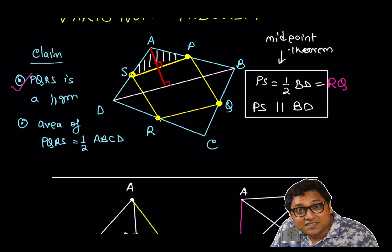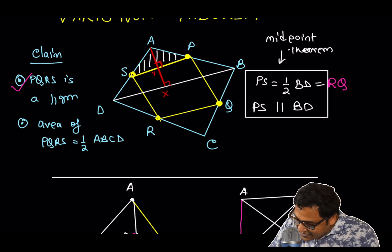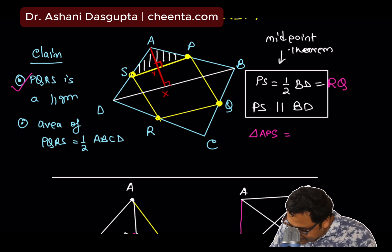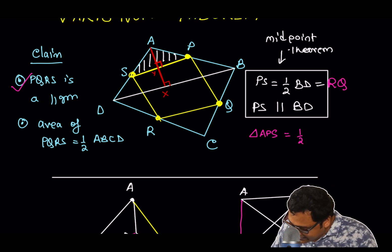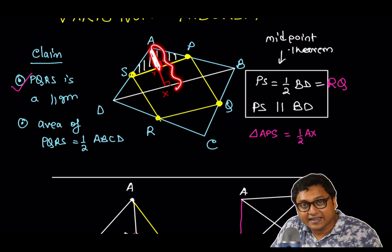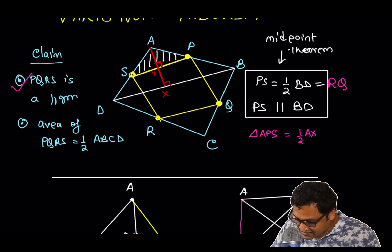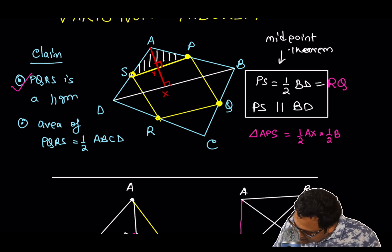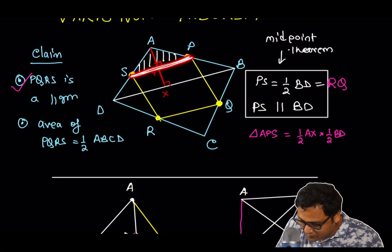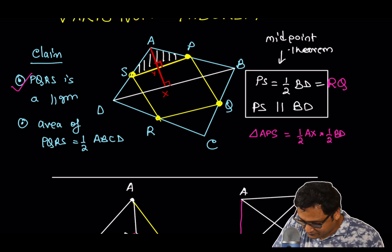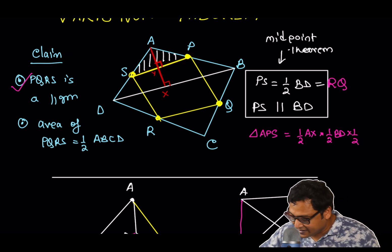Now, we are almost done. Because if this point is X and this point is Y, then what is the area of triangle APS, the shaded region? It is half of AX, that is AY. Half of AX is AY. Again, I'm using the midpoint theorem. Times half of BD. Half of BD is PS. PS is half of BD. So, base into height times half. That is the area of triangle APS.